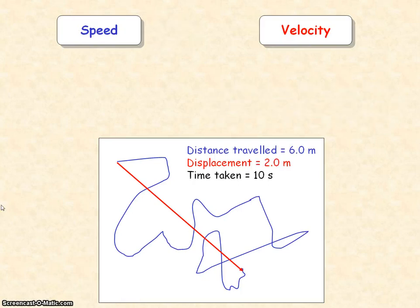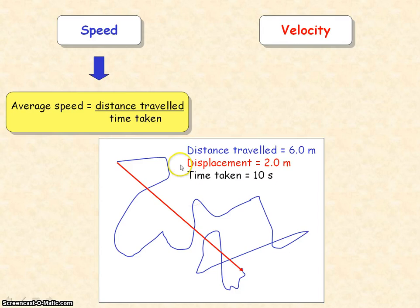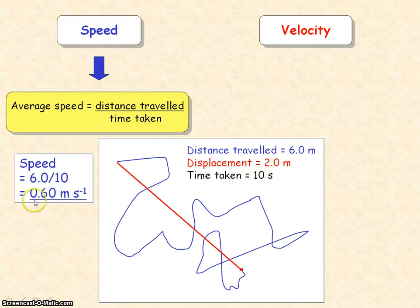The speed of an object is found by the distance travelled divided by the time taken, and this equation is the definition for speed. In our example, the distance travelled was 6 meters and it took 10 seconds, so the speed equals 6 meters divided by 10 seconds, which equals 0.60 meters per second.